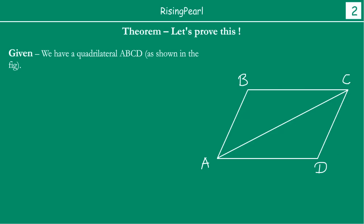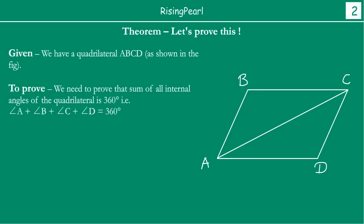Now Dostow, the next step is what do we need to prove. We need to prove that the sum of all internal angles of the quadrilateral is 360 degrees — that is, angle A, angle B, angle C, and angle D, all four angles together should be 360 degrees. This is what we have to prove.